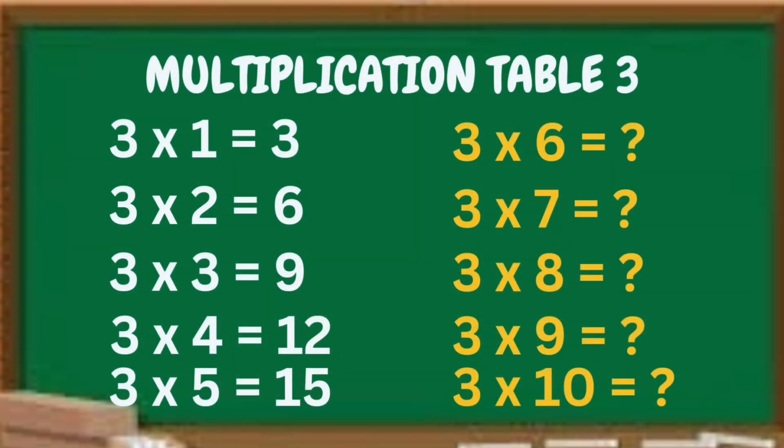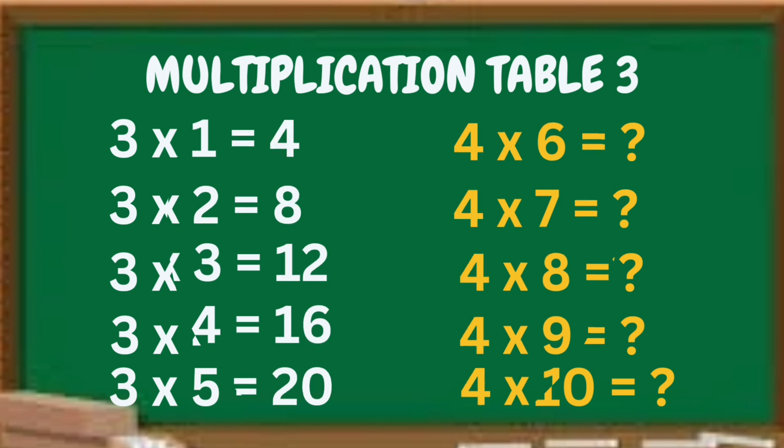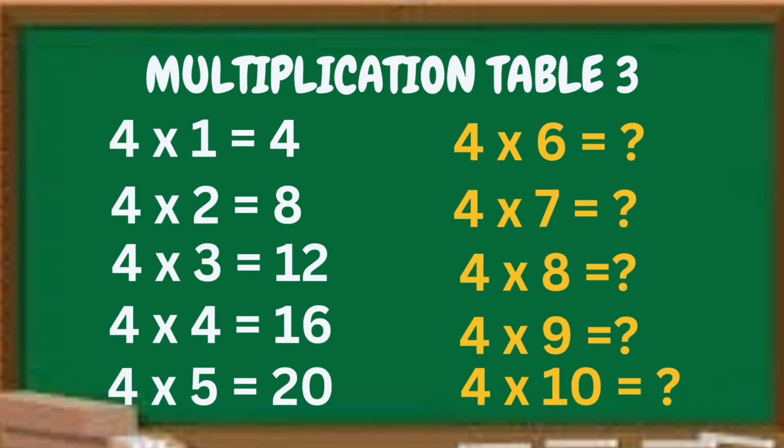We have here a Multiplication Table 3, and as you can see, half of it has an answer already, while the other half has not. Later on, we'll answer those. Before that, let's see the Multiplication Table 4 next. It's the same as in Table 3 — half of it has an answer, while the other half has not.